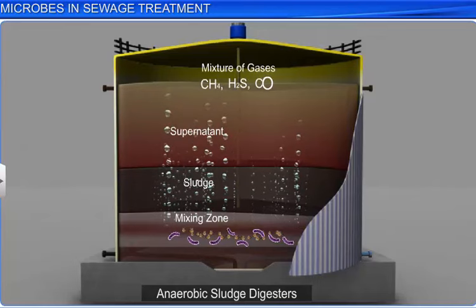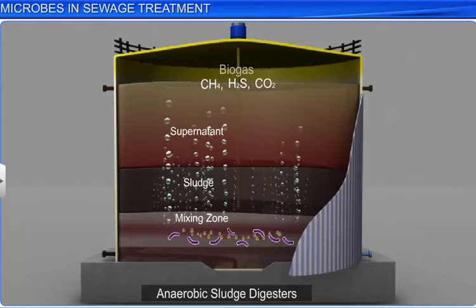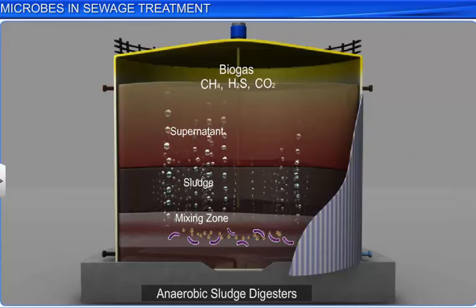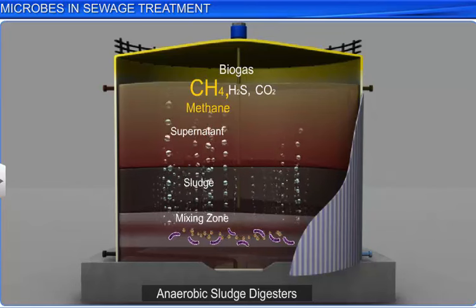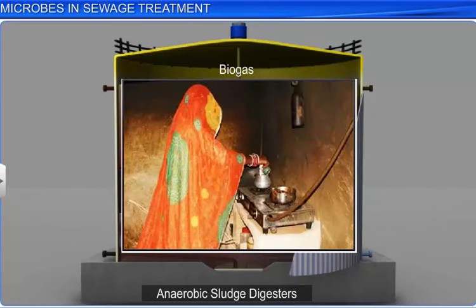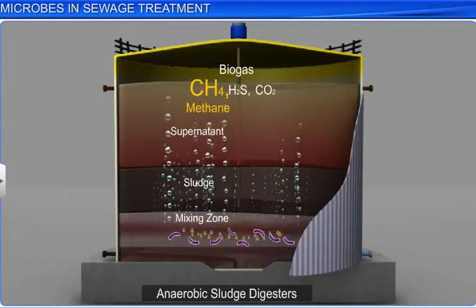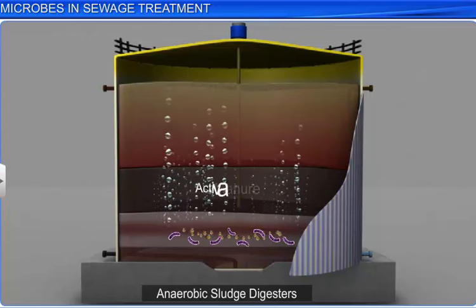This mixture of gases is also called biogas and is used as fuel since it is inflammable. Methane is the main gas produced from sewage treatment and also serves as fuel — it is used to produce heat in homes and factories. The sludge left after digestion of both aerobic and anaerobic bacteria is used as manure and is called activated sludge.